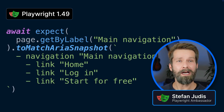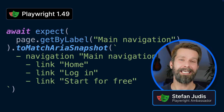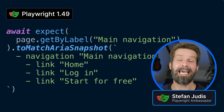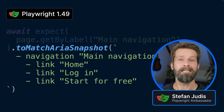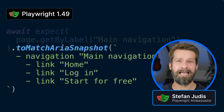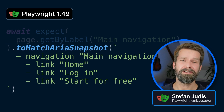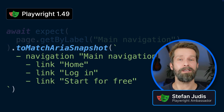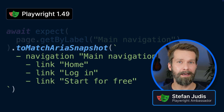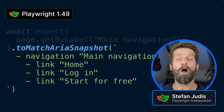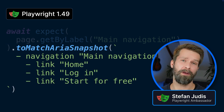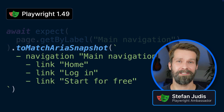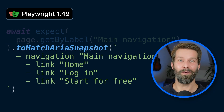Hey friends! Playwright 1.49 was released last week and it included a real highlight. toMatchARIASnapshot is a new assertion that will allow you to validate your websites and web apps, and also probably replace a whole lot of other web-first assertions. If you haven't heard of it, this video is for you.